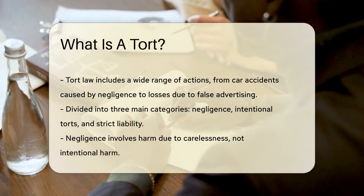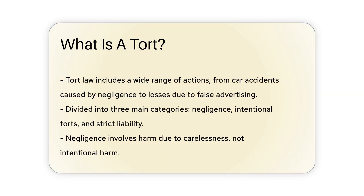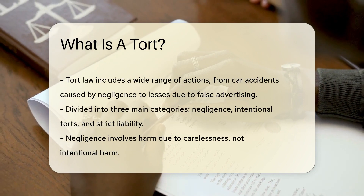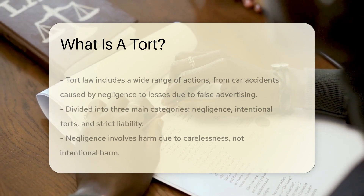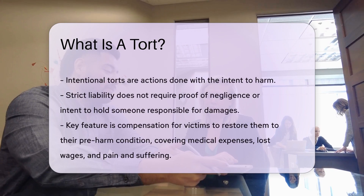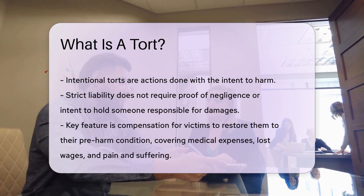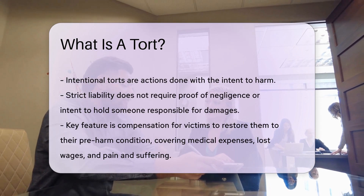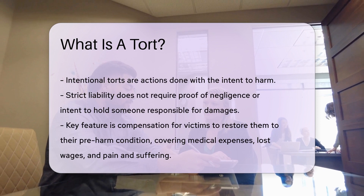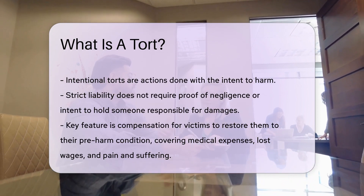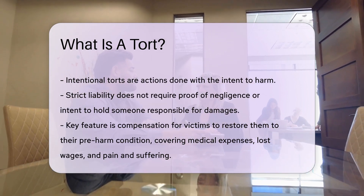This area of law divides into three main categories: negligence, intentional torts, and strict liability. Negligence involves harm caused by carelessness, not intentional harm. Intentional torts, as the name suggests, are actions done with the intent to harm. Strict liability holds individuals or entities responsible for damages without the need to prove negligence or intent.